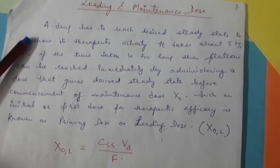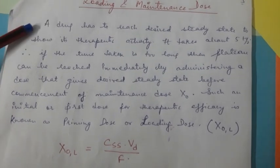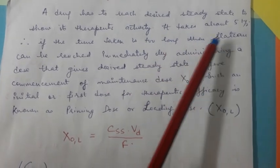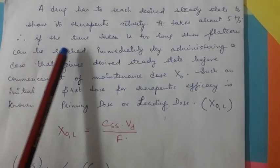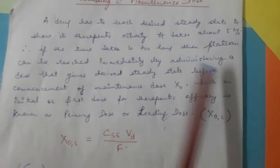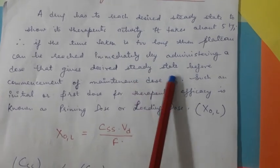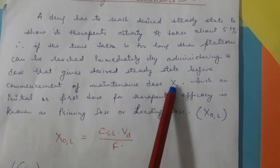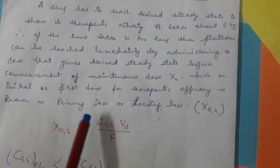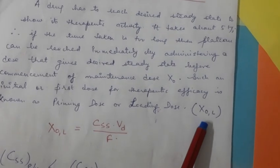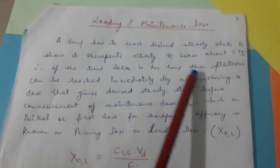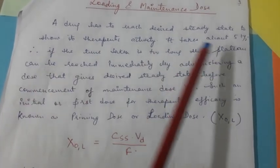A drug has to reach desired steady state to show its therapeutic activity. It takes about five half-lives. Therefore, if the time taken is too long, then plateau can be reached immediately by administering a dose that gives desired steady state before commencement of maintenance dose. Such an initial or first dose for therapeutic efficacy is known as priming dose or loading dose. In general, koi drug yadi steady state mein jana hai usko, to multiple dosing mein woh 5 half-life leti hai - ye hum pahle bhi dekh chuke hain.